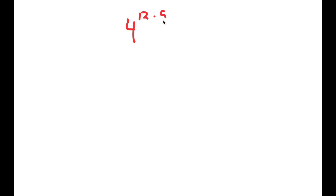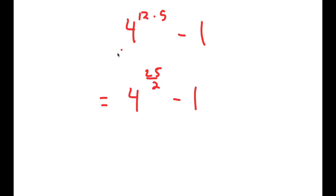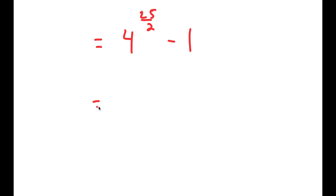In this video I'm going to solve the problem 4 to the power of 12.5 minus 1. I'm going to first rewrite this as 4 to the power of 25 over 2, because 12.5 is equal to 25 over 2. This is the same thing as 2 squared to the power of 25 over 2.